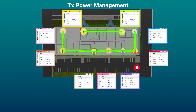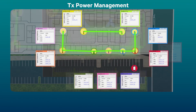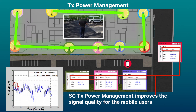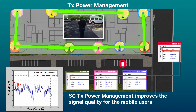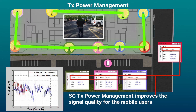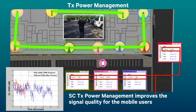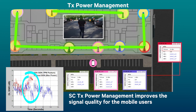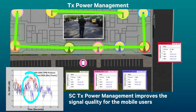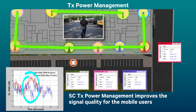Transmit power management is important for avoiding pilot pollution and interference. For a mobile user walking outside the building, when the Ultrasound transmit power management feature is enabled, there is a significant improvement in the user's downlink signal quality due to reduction in pilot pollution, as shown in the graph below.